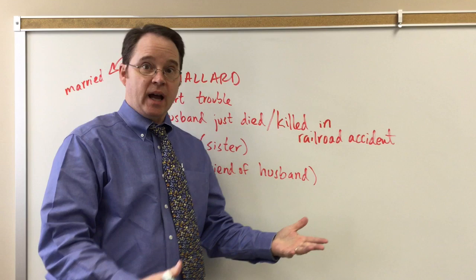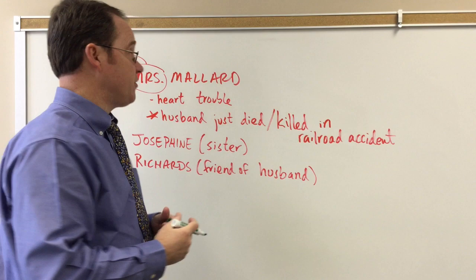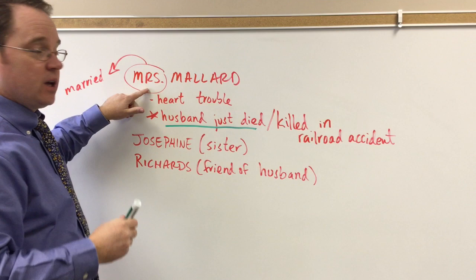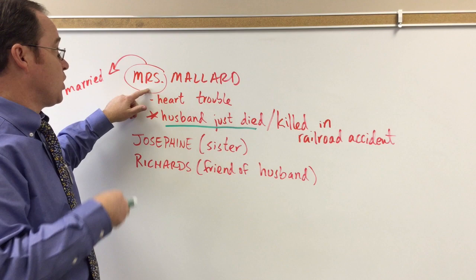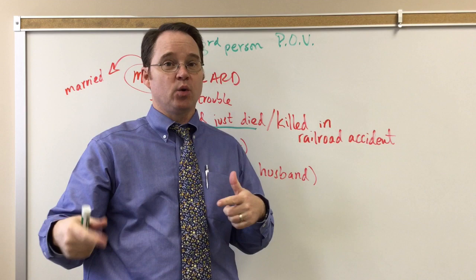After reading, I've gone in and jotted some things down. The inciting incident — what starts the whole story off — is the death of Mr. Mallard. What's interesting is that we see the story not through Mrs. Mallard's eyes, which would be first person, but we have this in third person point of view. Mrs. Mallard is the focal point, the main character of the story, but the story is not told through her eyes.